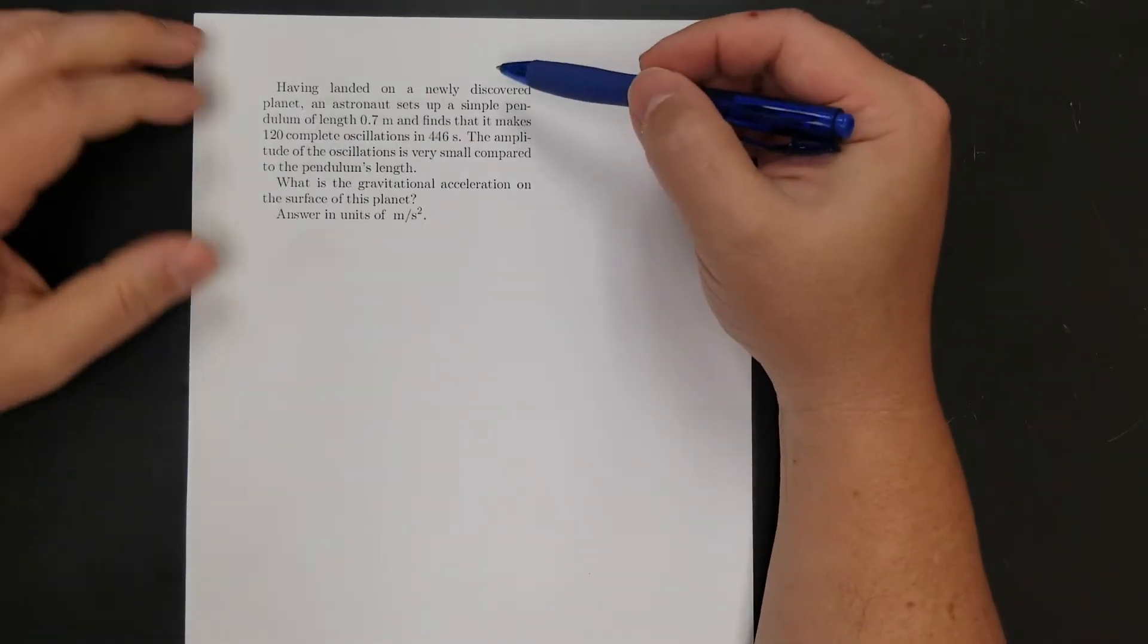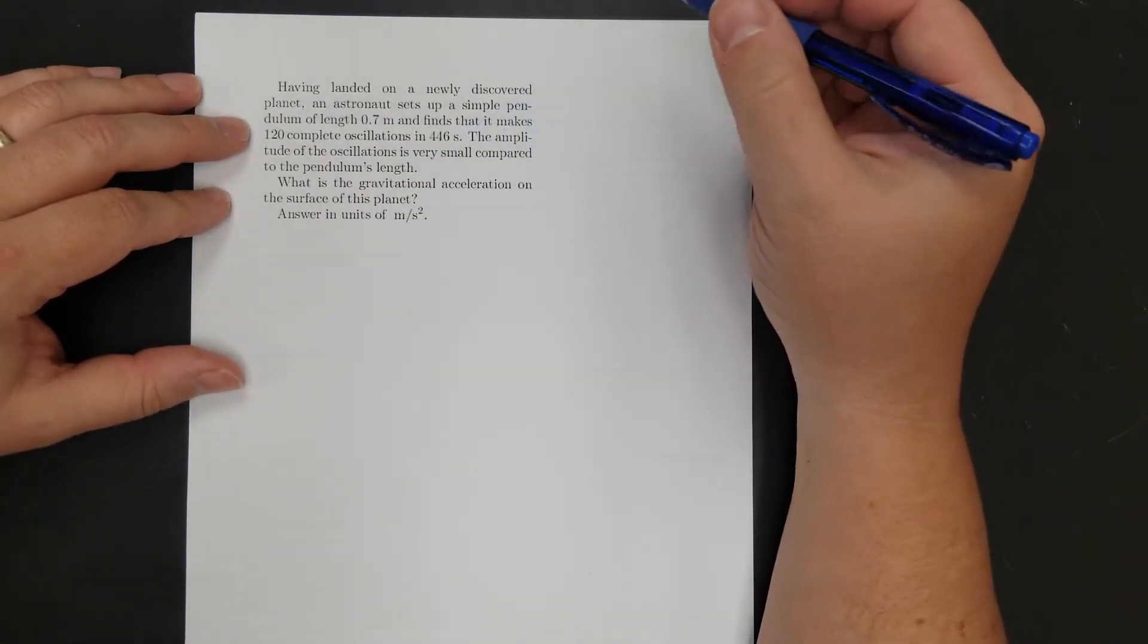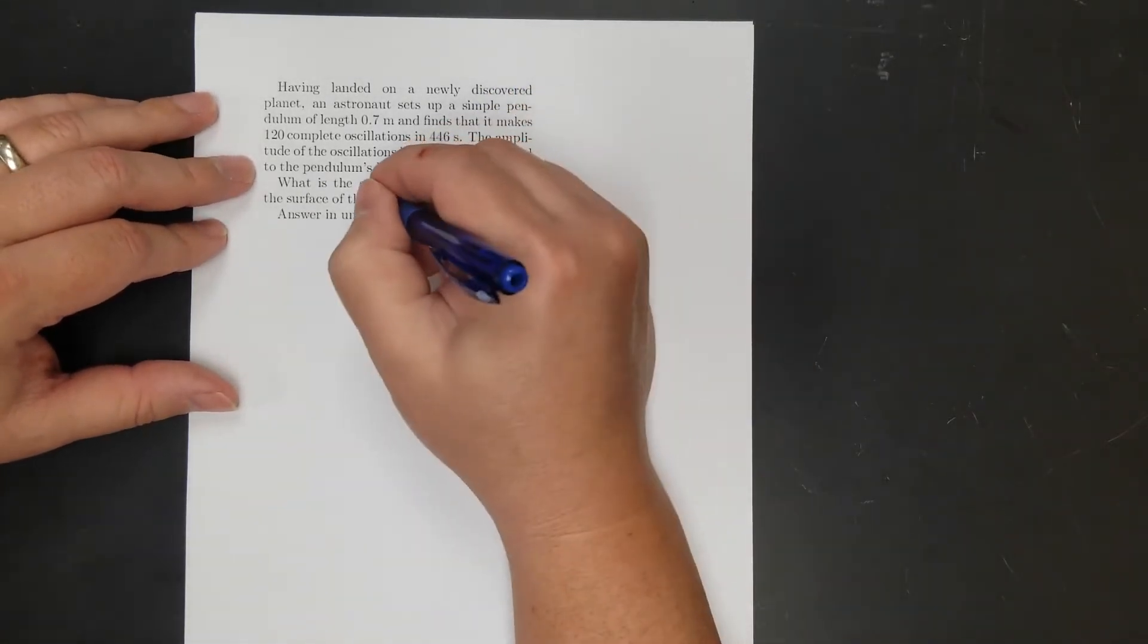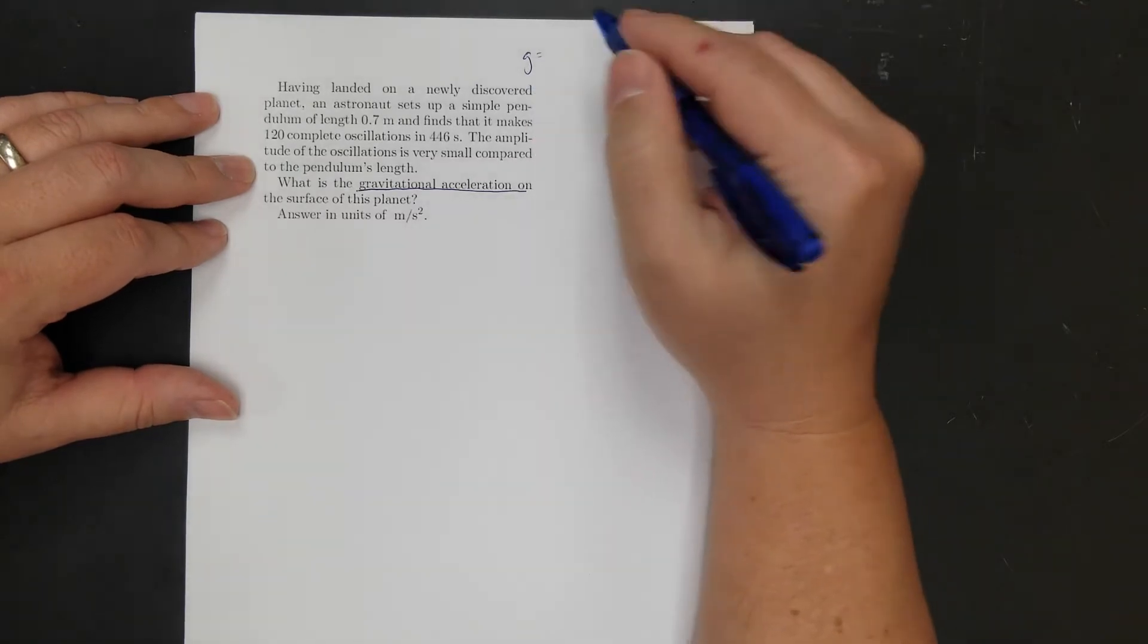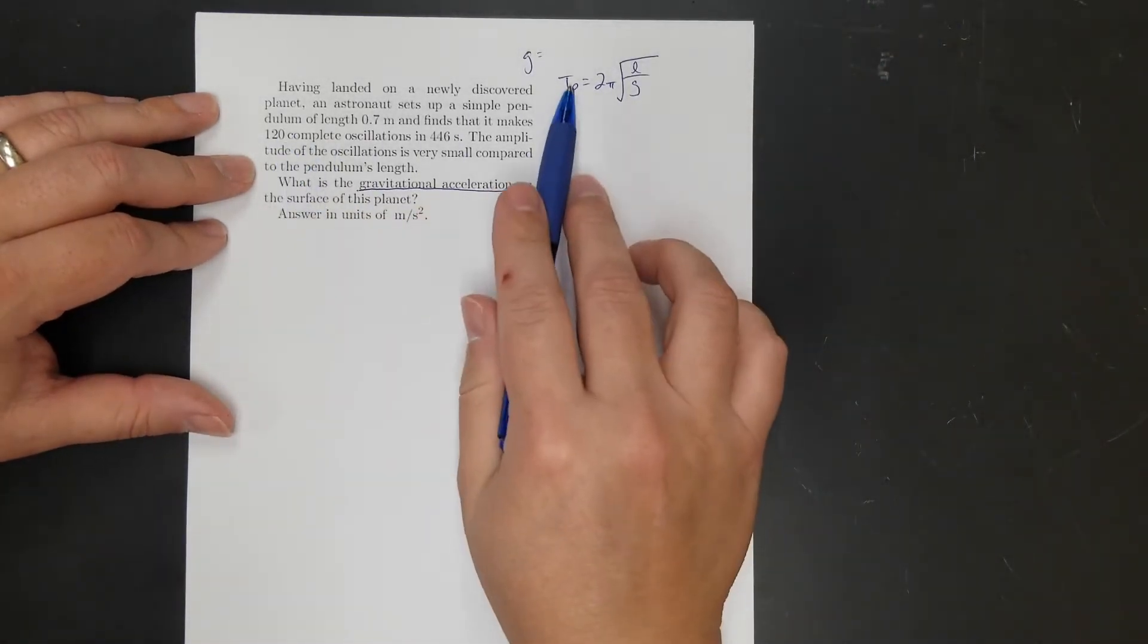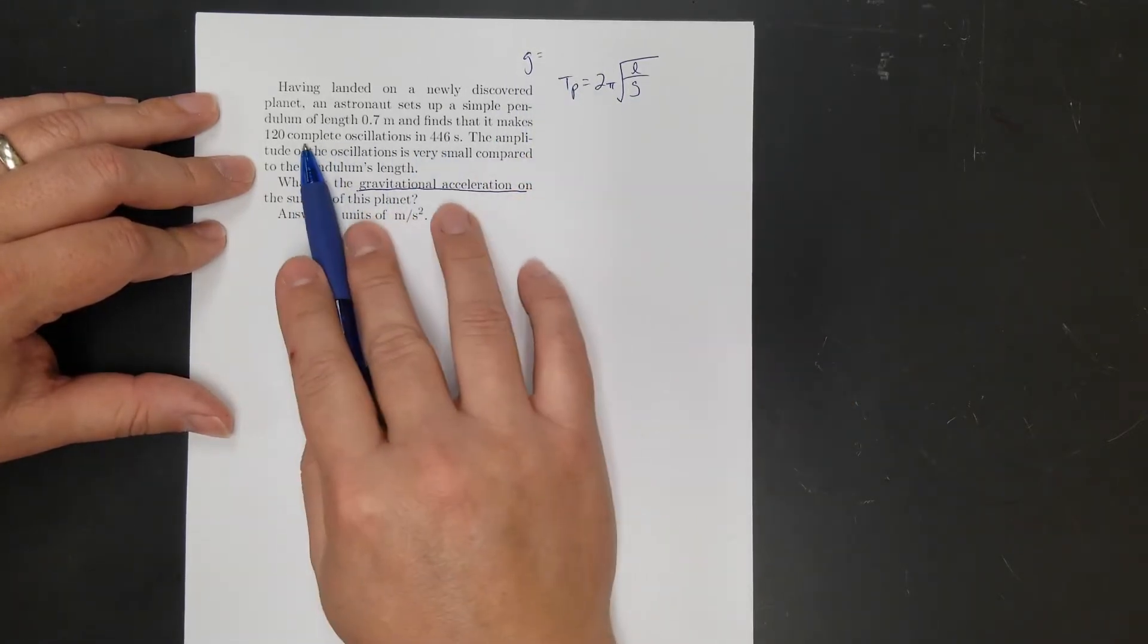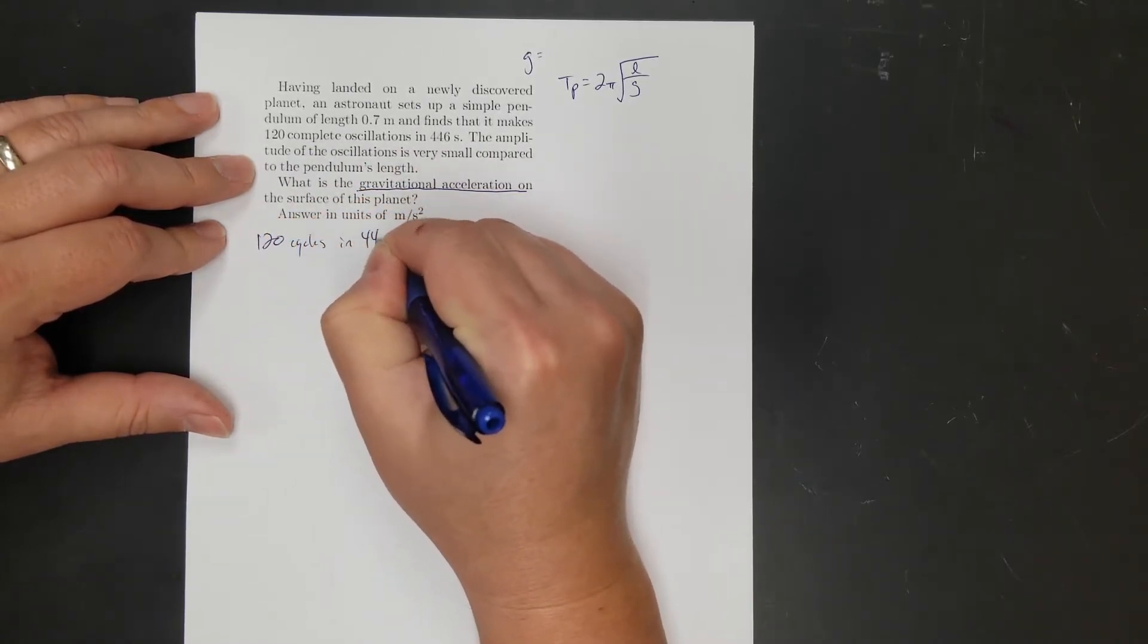Okay, so let's solve a couple problems. So first one, having landed on a newly discovered planet, an astronaut sets up a simple pendulum. So that's the first thing you do. You get to a newly discovered planet and you set up a pendulum. The amplitude of oscillation is small compared to the length. What is the gravitational acceleration? All right, so I know I'm solving for g. So I'm doing a pendulum. So I'm going to write this down first so I know what equation I'm working with.